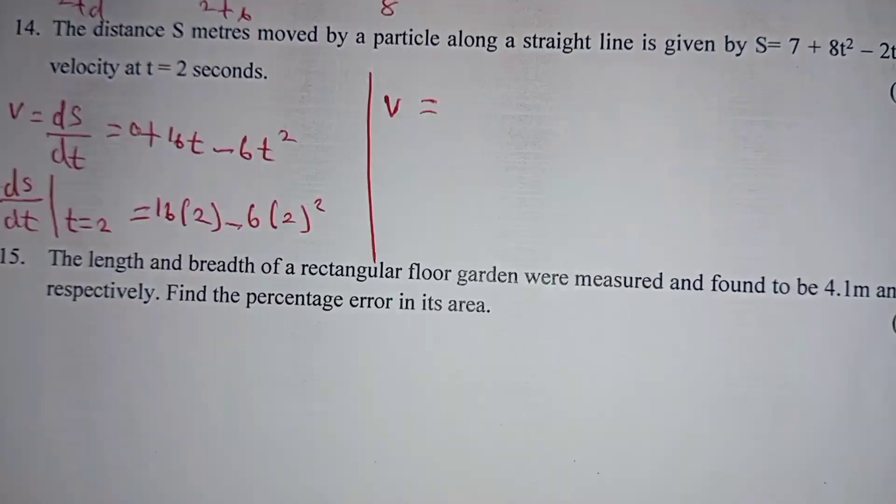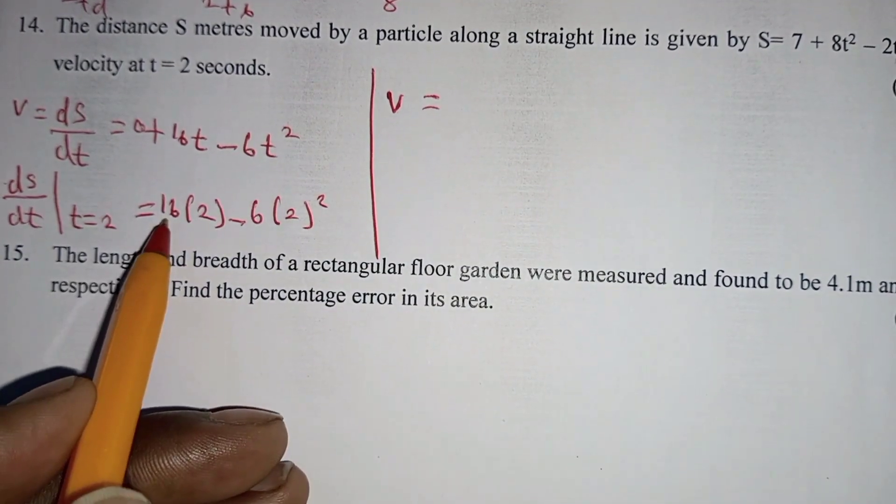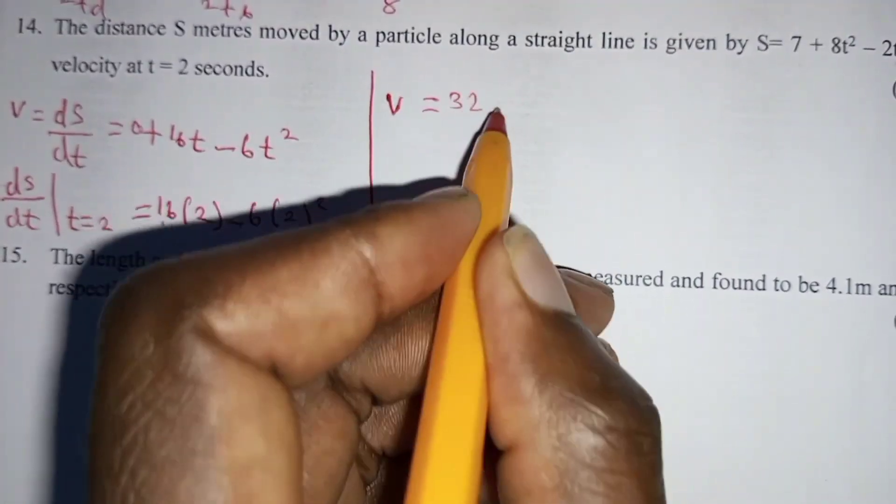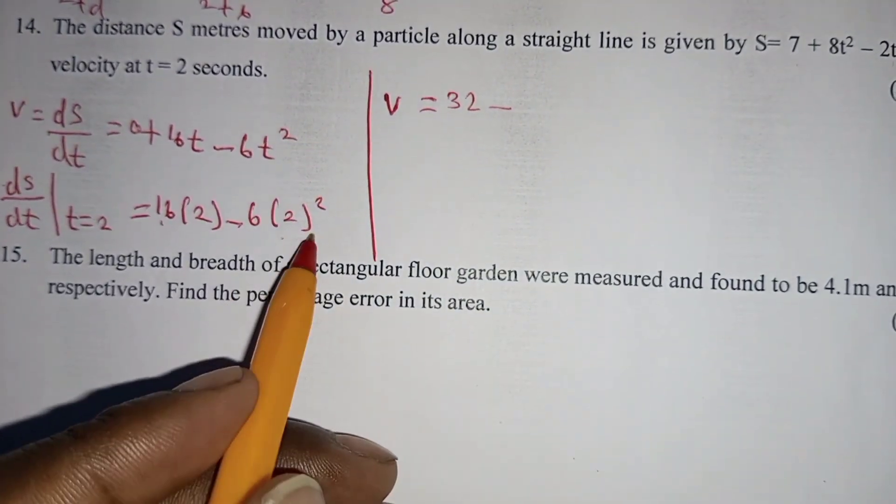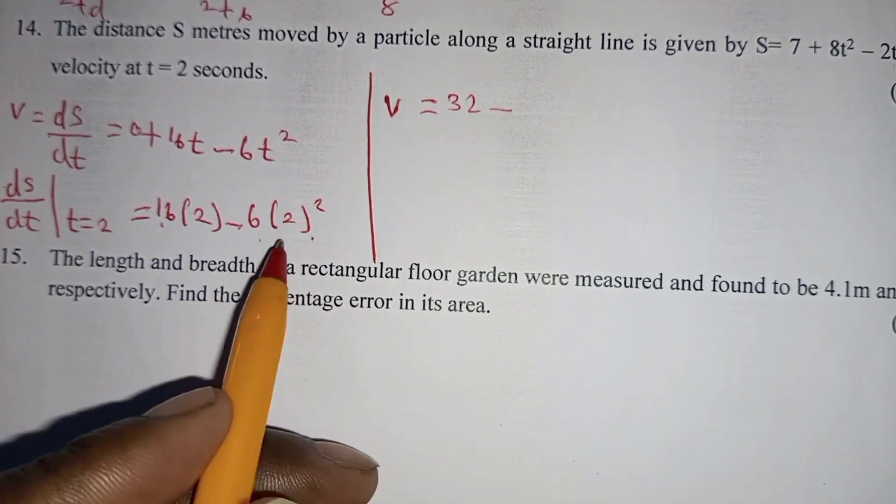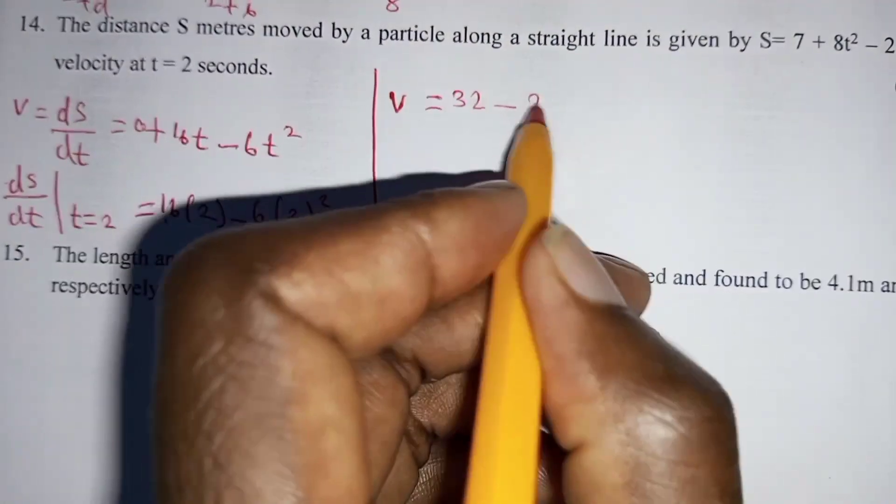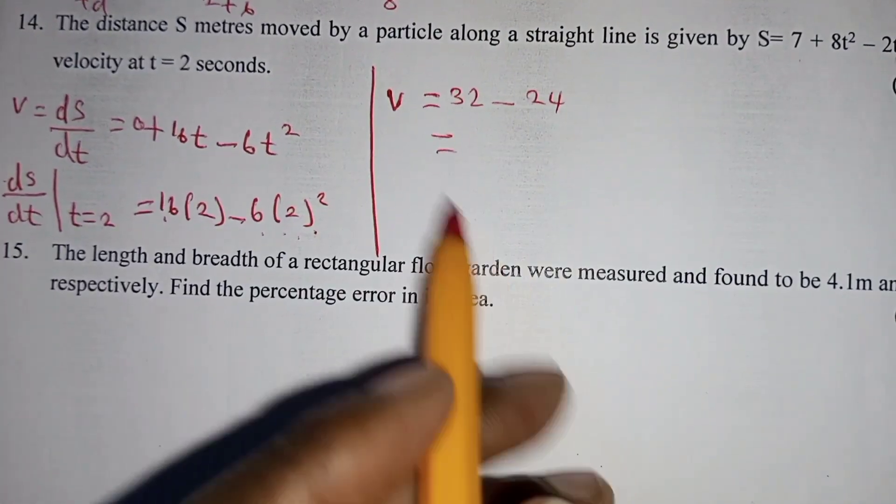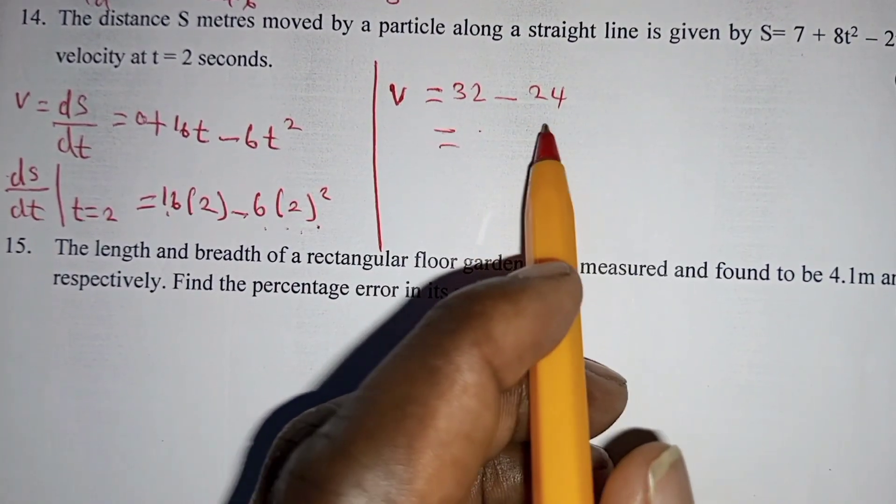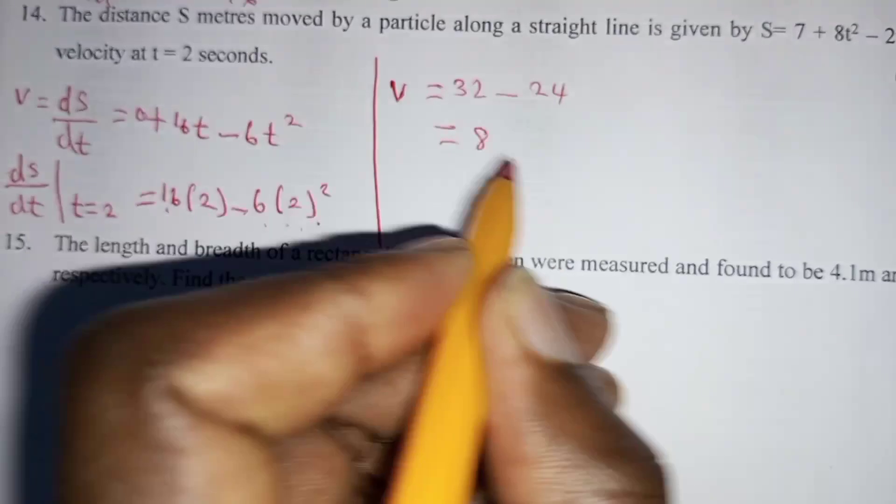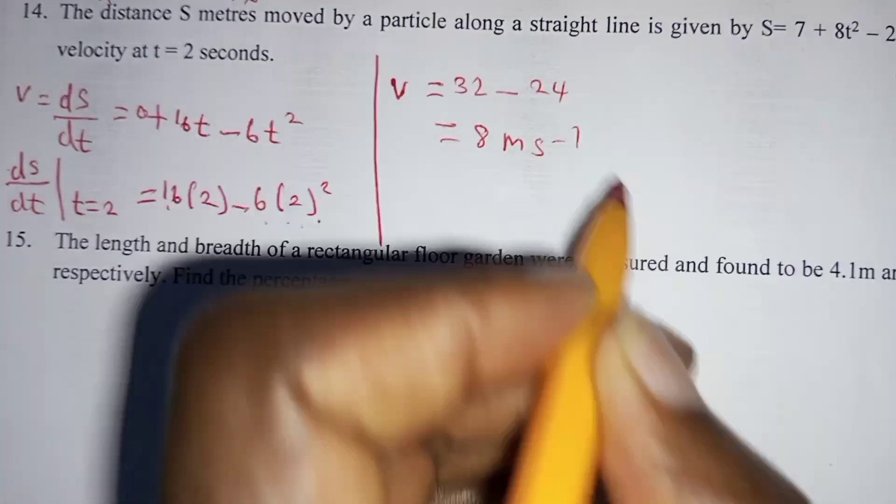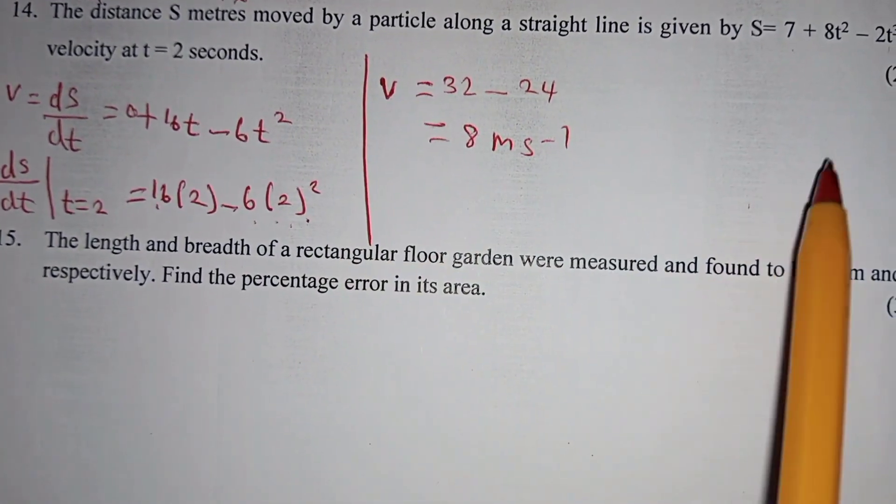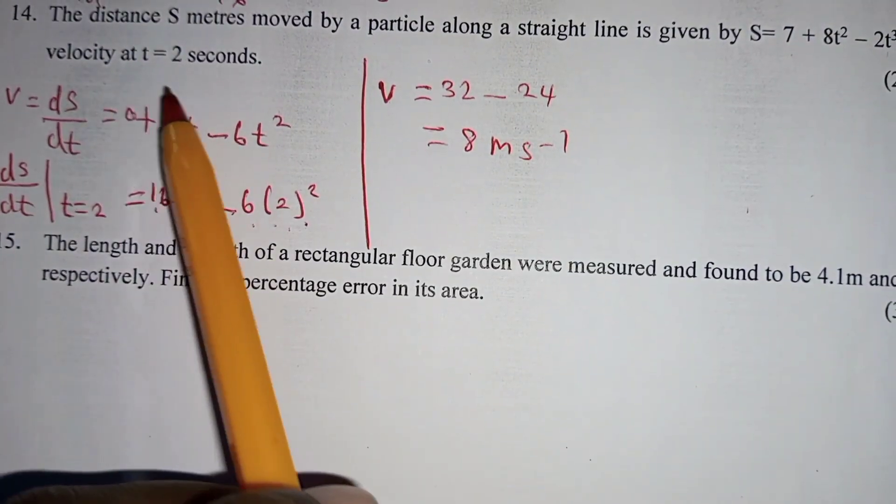Velocity is equal to 16 times 2 will give you 32 minus... 2 squared is 4, 6 times 4 will give you 24, which is equal to 32 minus 24 will give you 8 meters per second. That is the velocity at t equals 2 seconds.